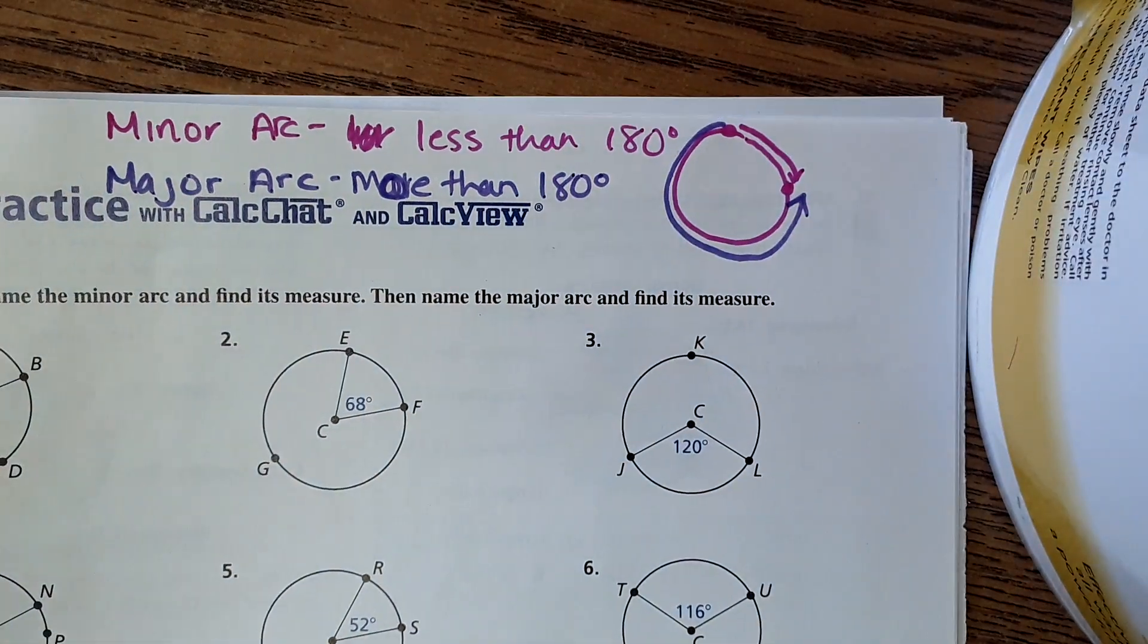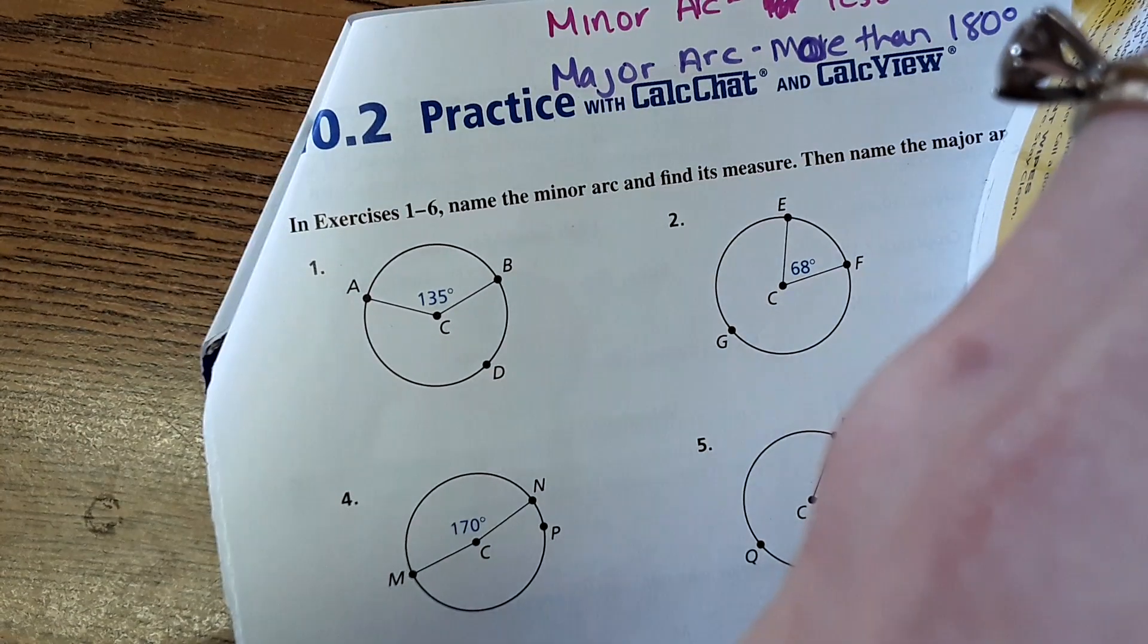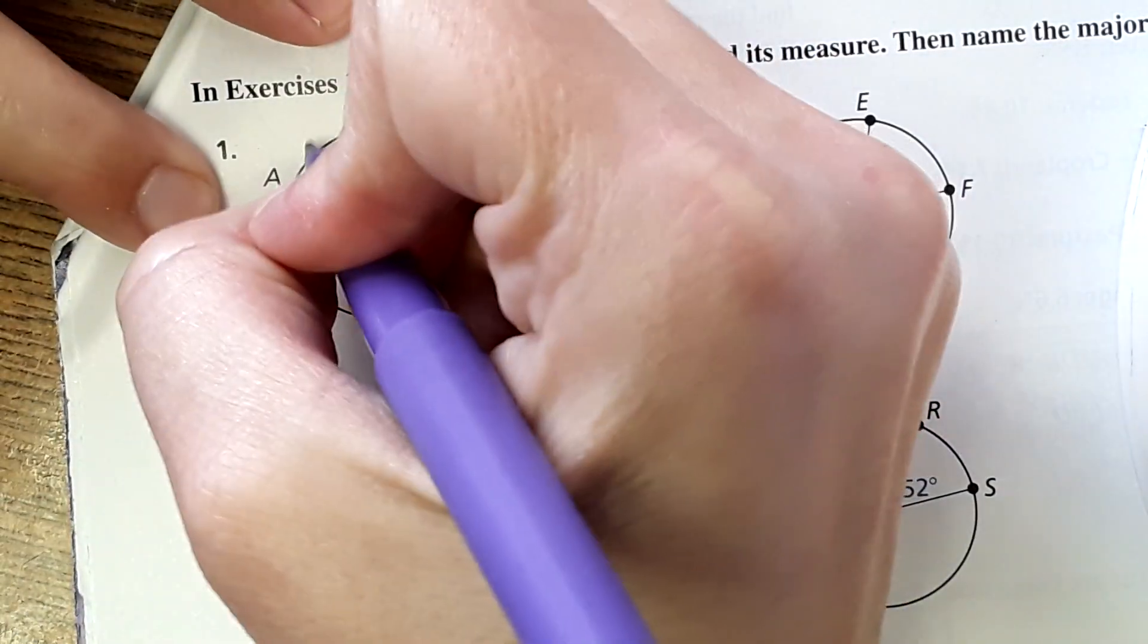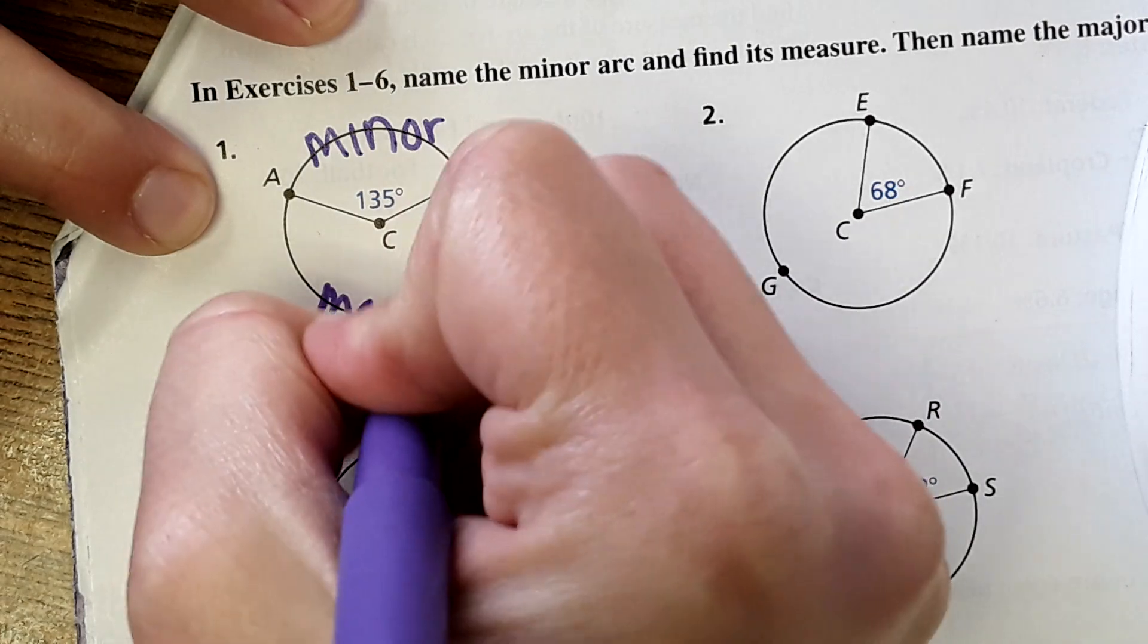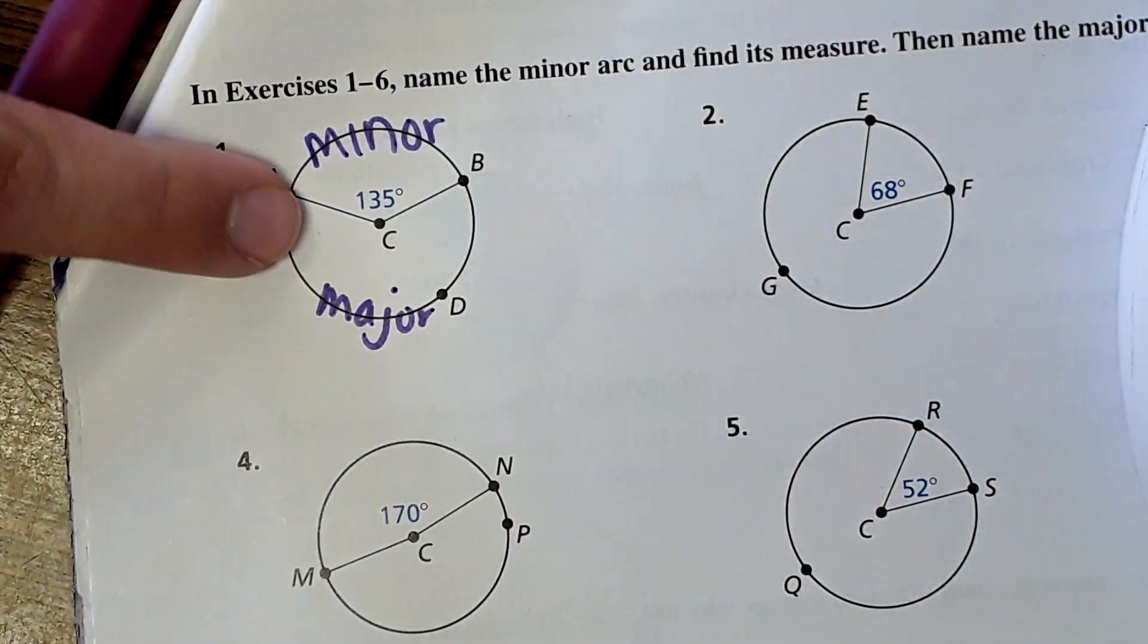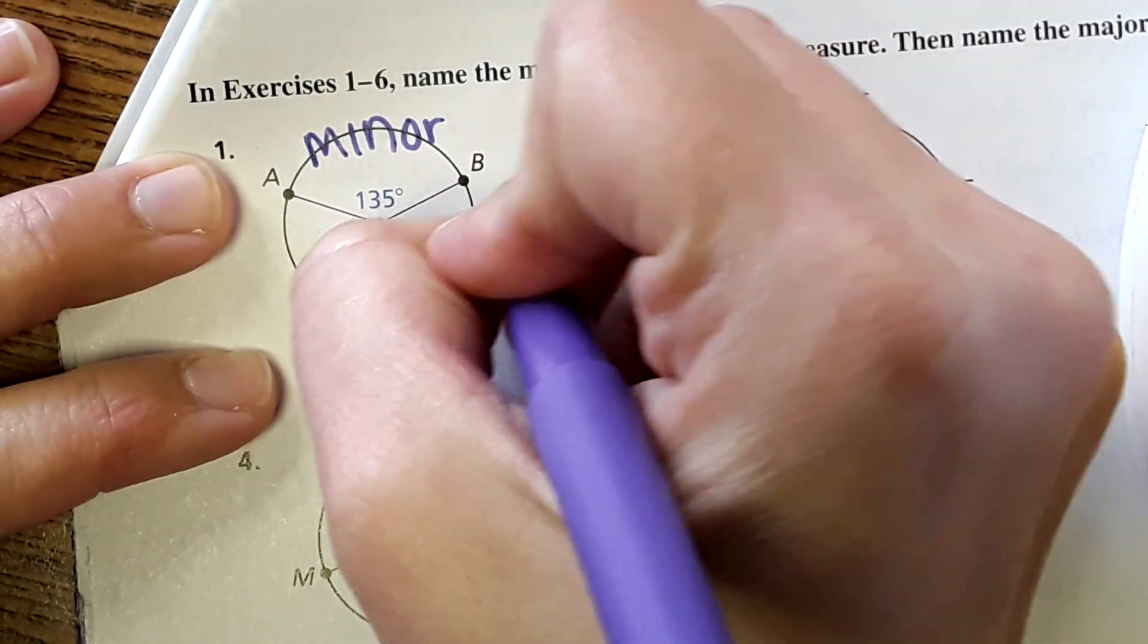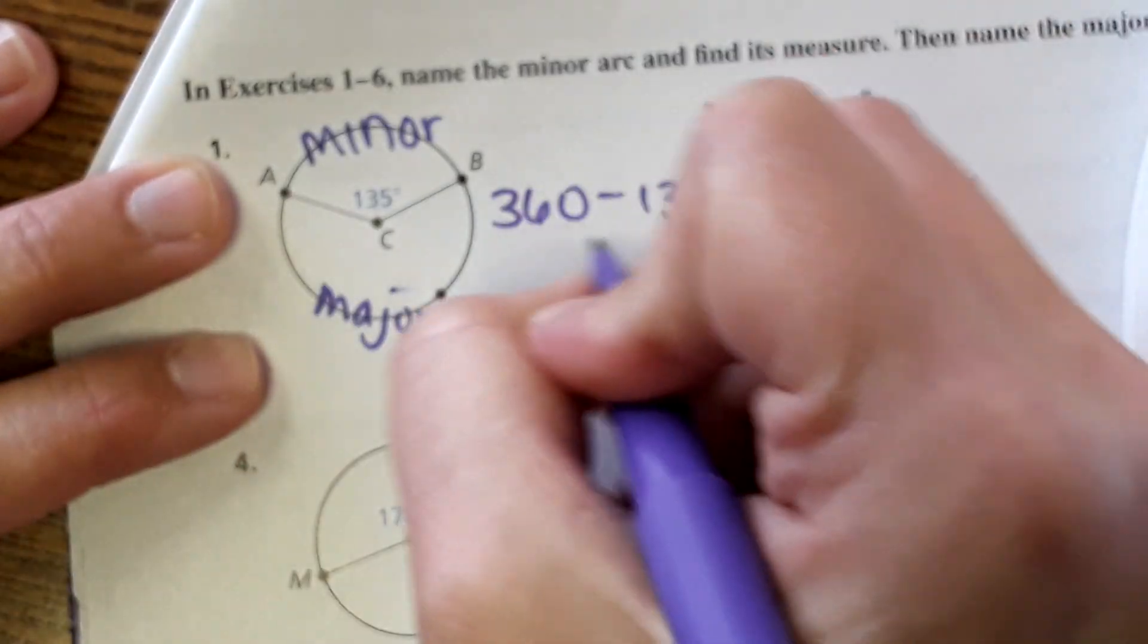Now looking at the first example, it says name the minor arc and find its measure, then name the major arc and find its measure. So looking at number one it shows us the 135 degrees, this would be the minor arc and then this would be major. The angles all around the circle add up to 360, so 360 minus 135 would give us that measure which comes out to 225 degrees.